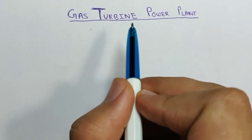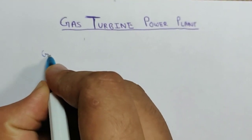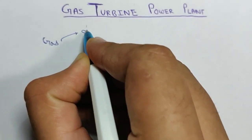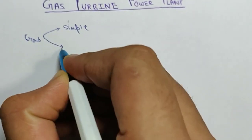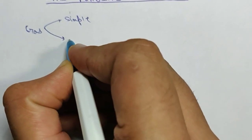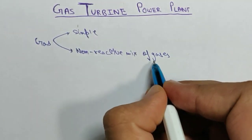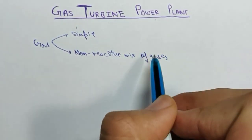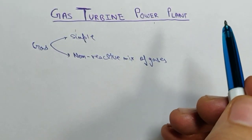The gas can be of any type — it can be simple gas like the air around you, natural gas, or it can also be a non-reactive mixture of gases, so that the power plant does not react with any of the gas and it does not corrode.